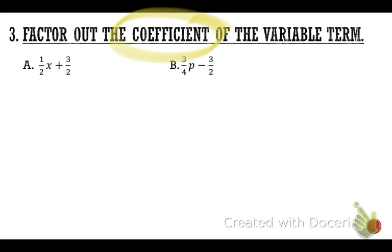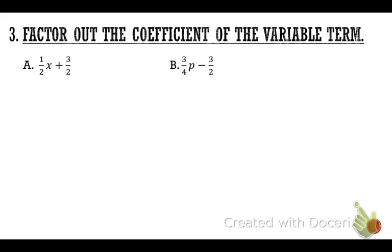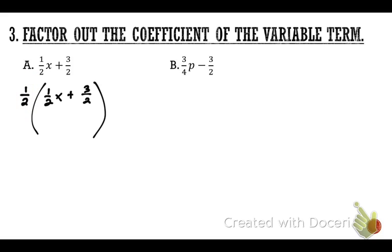The next section says to factor out the coefficient of the variable term — it tells us what to factor out, so we don't even have to find the GCF. What is a coefficient? The number part of a variable term. The coefficient here is one half, so we're going to take one half out of the expression. Rewrite the original problem: ½x plus 3/2. Divide every term by ½.